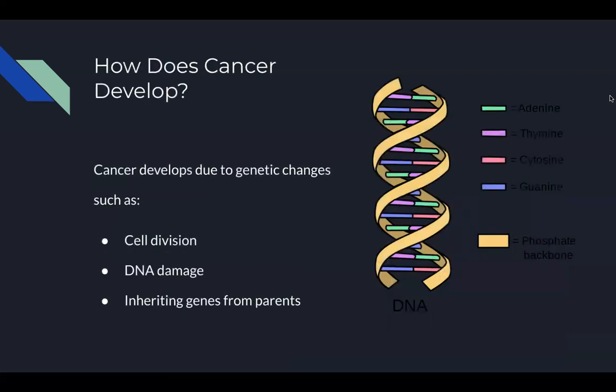How does cancer develop? Cancer develops mainly due to genetic changes caused from things like cell division, DNA damage, and genes being passed down from parents. During cell division, there is always the chance that errors will occur due to abnormal growth or damage to the cell. Cancer is also caused by DNA damage. An example involves people staying out in the sun too long, which causes the DNA to be affected by UV rays. There are also other ways in which DNA can be damaged, such as exposure to toxins and different chemicals.